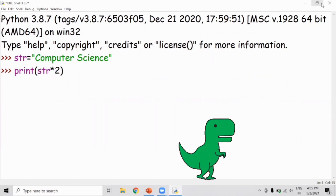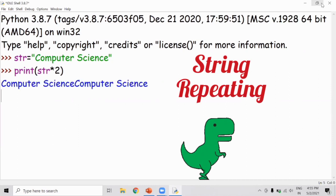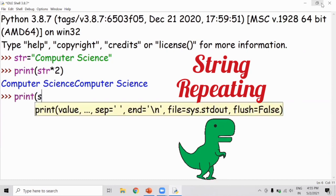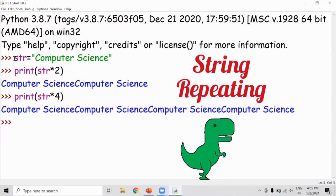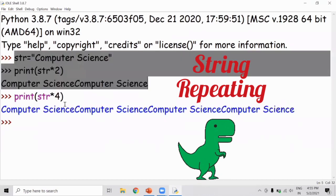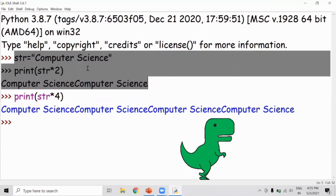Now print, first we will do string repeating. STR star 2, so computer science 2 times we will print out. As I said earlier, print STR star 4 times would give 4 times computer science. But this problem uses STR star 2, so you will get 2 times the given string.